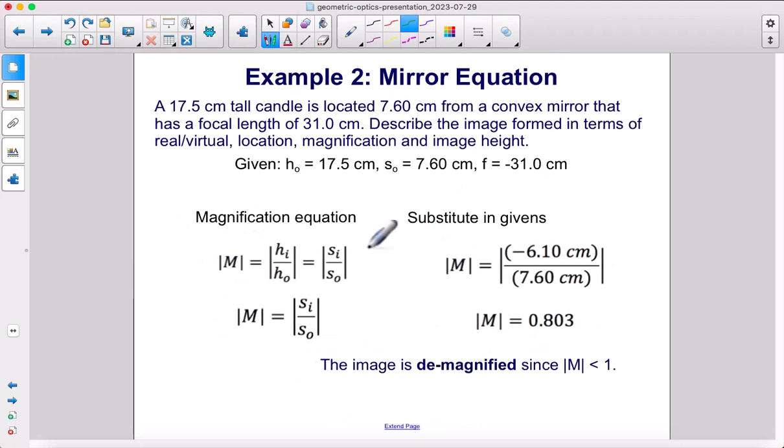To see if the image is bigger or smaller, we can use the magnification equation. We have these two pieces of information. We can just plug them in here. The negative sign doesn't really matter in this case because it's absolute value here. We have that the magnification is 0.803, which means it's less than 1, which means the image is demagnified. It is smaller than the object.